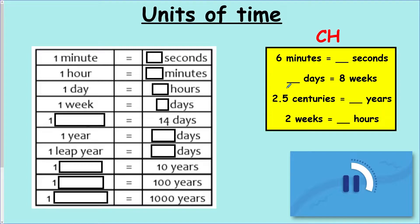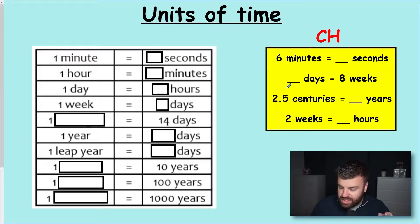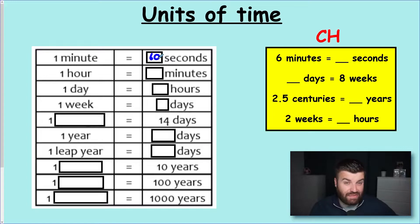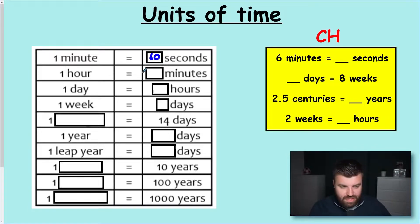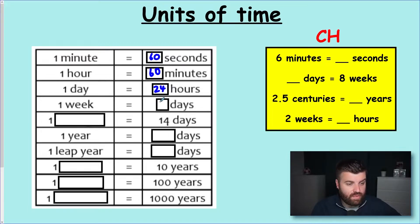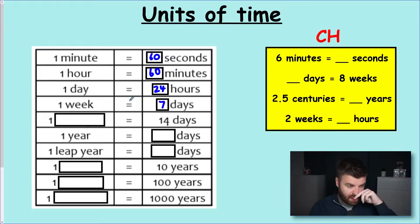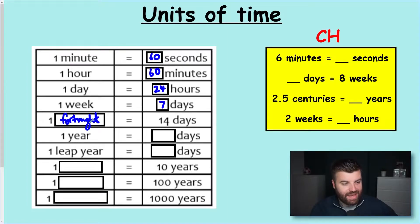Let's go through some of these answers. In one minute there are 60 seconds — that's quite frankly unavoidable, you must know that. One hour is 60 minutes. One day is 24 hours. One week is seven days. We do have a special name for 14 days — two weeks — but we also call that a fortnight. It's spelled differently to the popular game, but a fortnight is 14 days, two weeks, and it does pop up in a question on your homework.